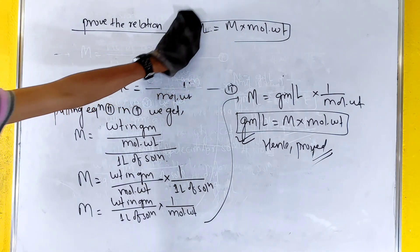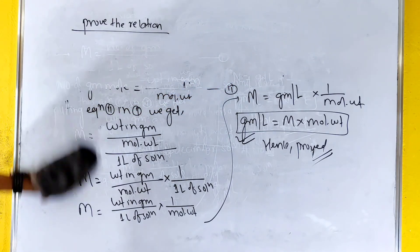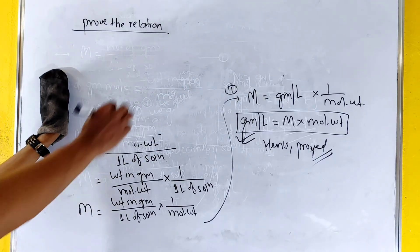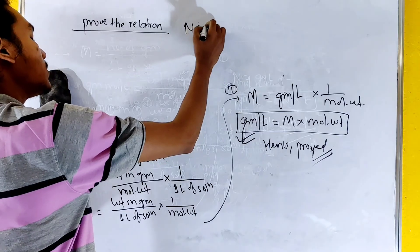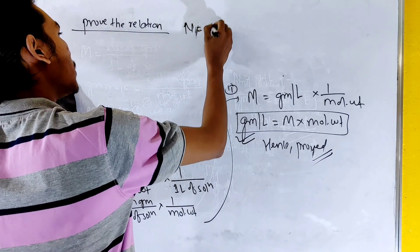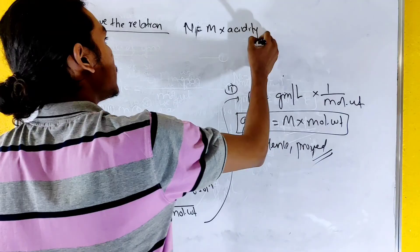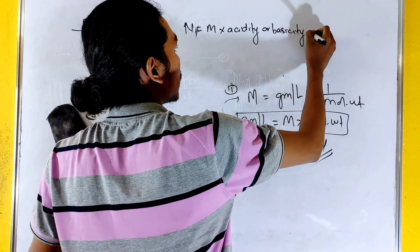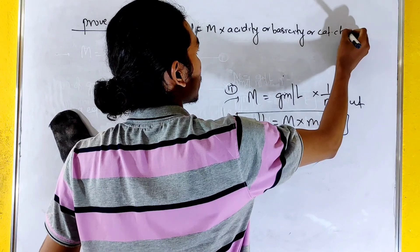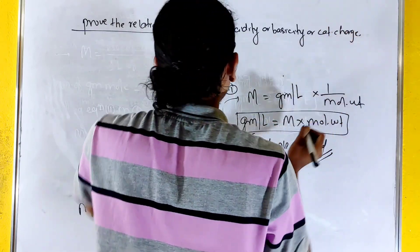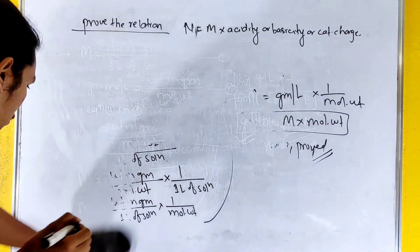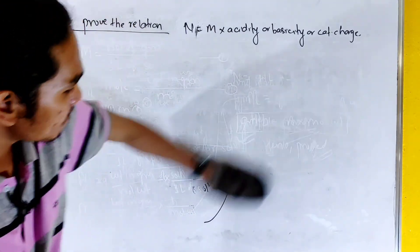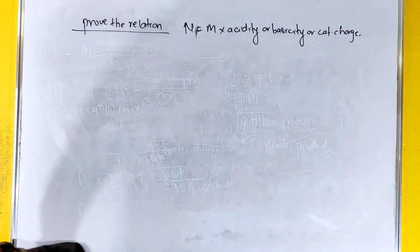For example, normality is equal to molarity multiplied by acidity, basicity, or cationic charge. So this is the relation.